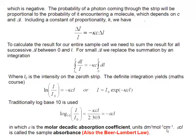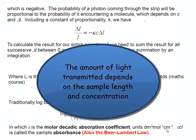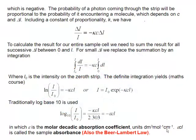Therefore, our delta I over I depends on the concentration of the sample. And also it depends on delta L, because if the sample is longer, then there's a greater chance that the photon of light will be absorbed because it has a greater chance of encountering an absorbing molecule.